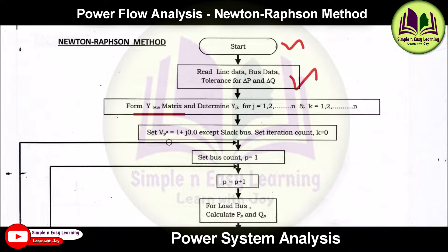Set the voltage profile as a flat profile — voltage equal to 1 + j0, or 1 angle 0 — for all buses except the slack bus. Then set the iteration count k equal to 0.